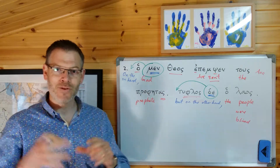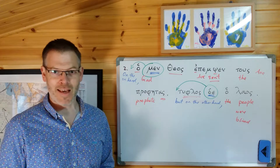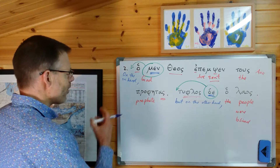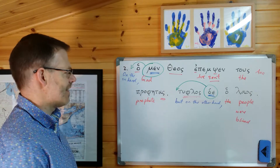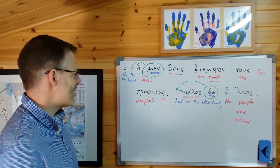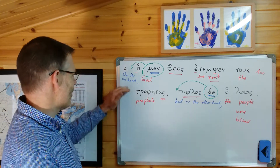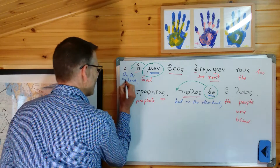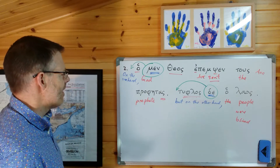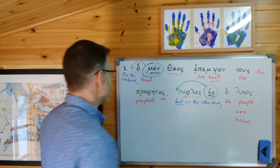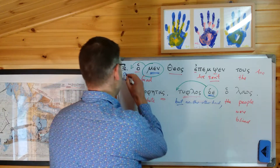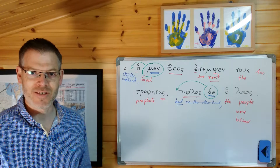That will give you the structure and shape of the sentence, and you can fit everything else around it. That's only a gloss, however. What you really want to do, having put that in, is think: how will people actually say this in English? This is a wooden translation - 'on the one hand, on the other hand.' How will we say this in English? Probably something much simpler, just retaining the 'but': 'God sent the prophets, but the people were blind.' That's probably how you'd say it.